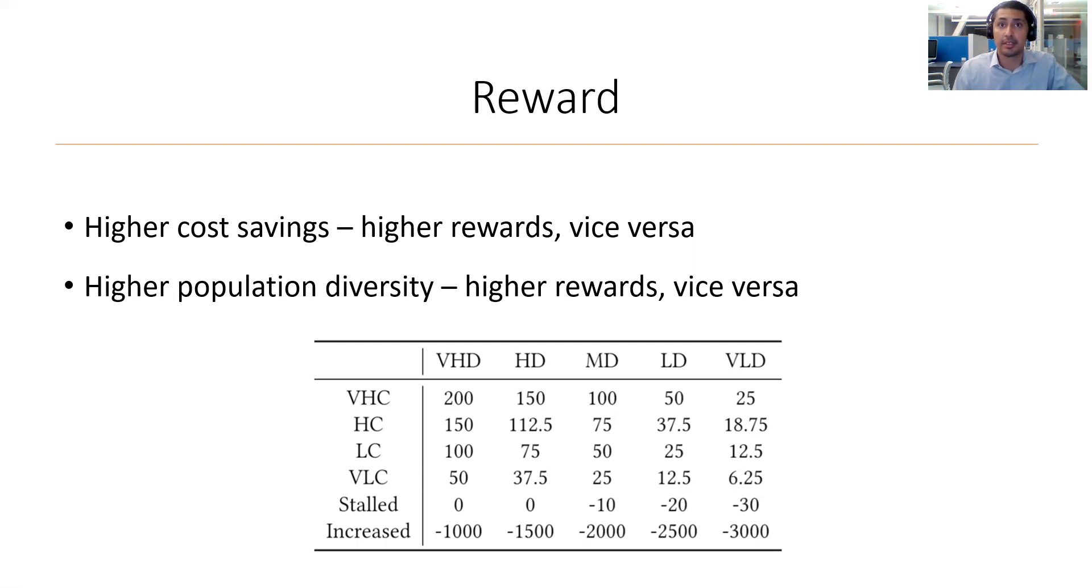The column headers indicate the diversity index state, defined from left to right, as very high diversity, high diversity, mid diversity, low diversity, and very low diversity. The rows indicated the cost savings, defined from top to bottom as very high cost savings, high cost savings, low cost savings, very low cost savings, no change in the cost, and then finally an increase in the cost. Though this was unlikely as the nature of the GA would not let this happen.